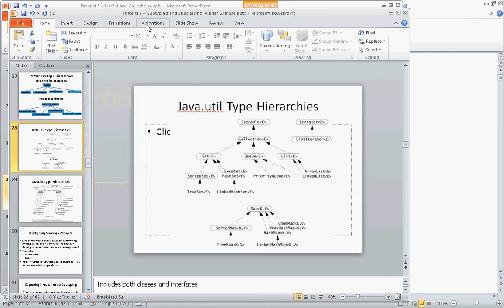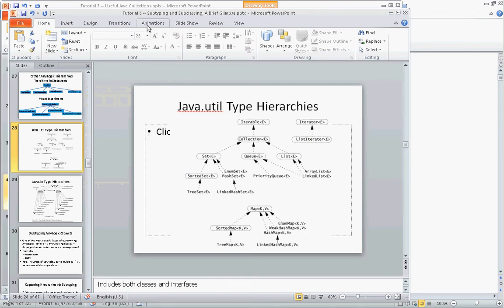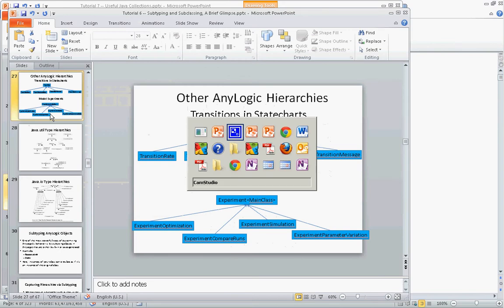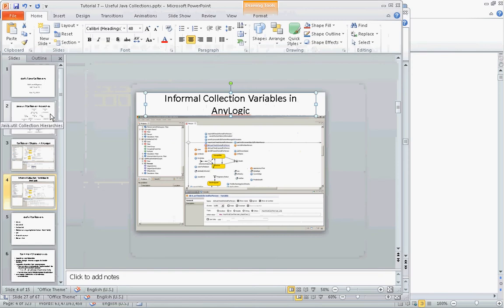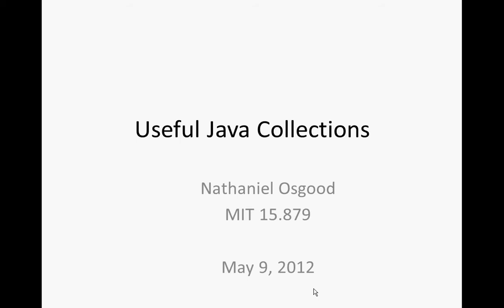Within today's class, to help make sense of some items we'll see in models, I'm going to introduce two sets of material related to Java. We'll see aspects of those components used in successive models. I'm going to give two lectures, one briefer and one longer, that will hopefully help make sense of some of the ways in which AnyLogic works and the particulars of the models we'll be looking at.